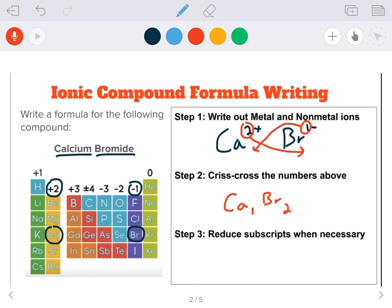Now remember whenever there's a one, we don't have to write it, but we just assume that it's there. So the reduced formula is just going to be CaBr2.